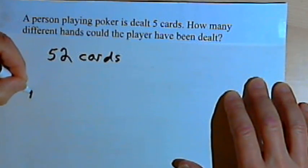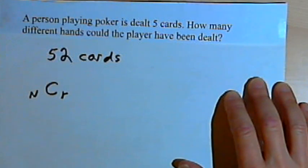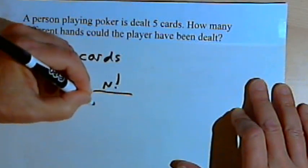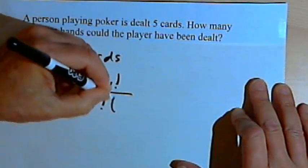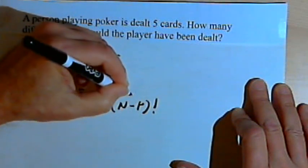So we're going to use the formula for combinations. We'll use that nCr formula. And that's n factorial over r factorial times n minus r factorial.